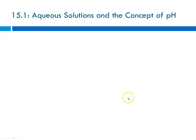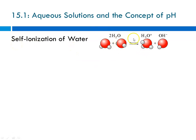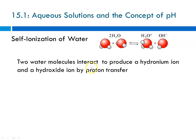First of all, let's talk about aqueous solutions, which means water is the solvent, and the concept of pH. There's something called the self-ionization of water. When you have water in a beaker or whatever, to a small extent it is self-ionizing, producing the hydronium ion and the hydroxide ion. Two water molecules can interact to produce a hydronium ion and a hydroxide ion by proton transfer. In equation form: 2H₂O produces H₃O⁺ and OH⁻ aqueous.